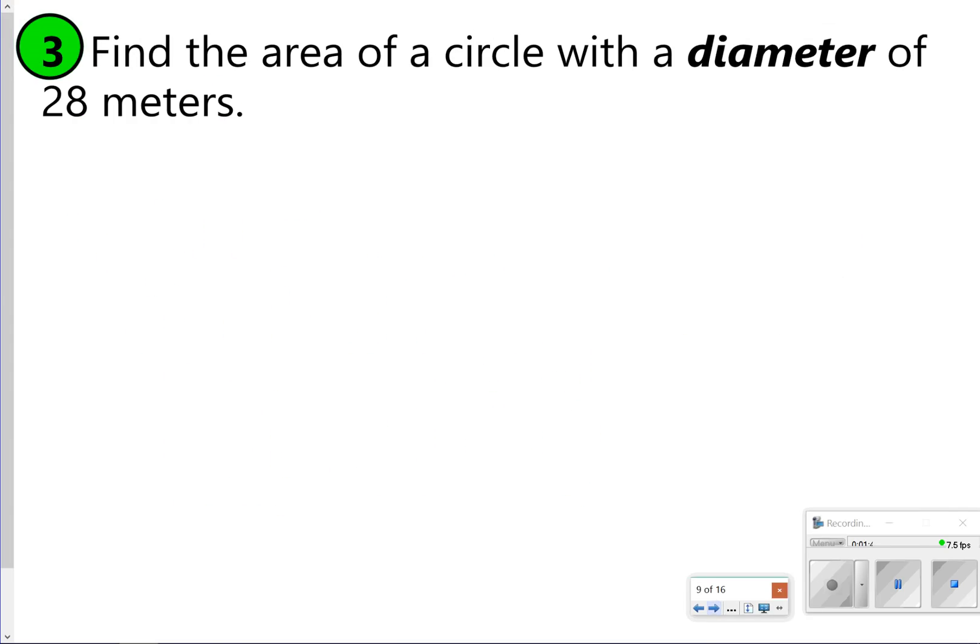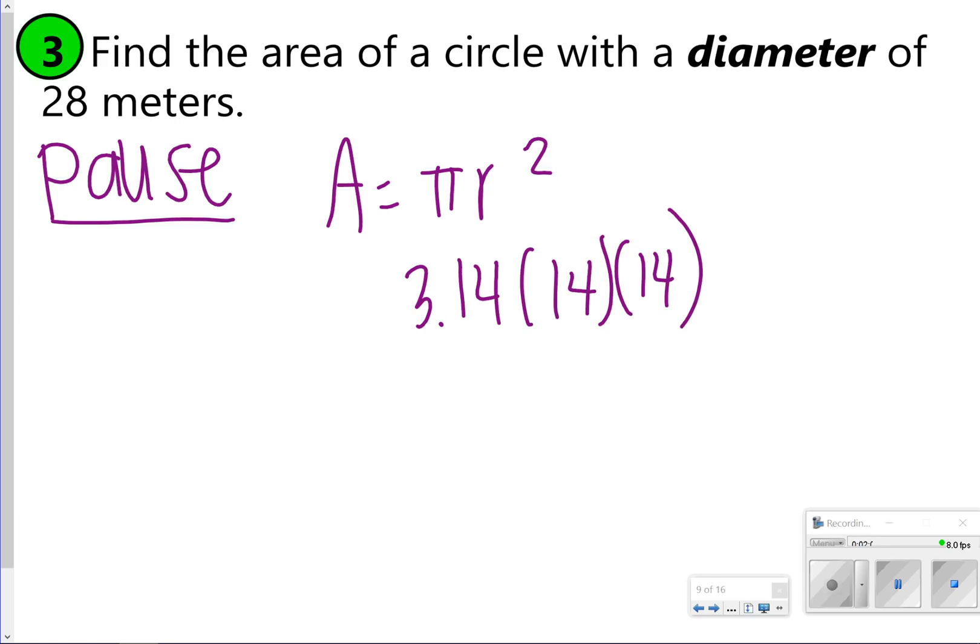Here's another one that you're going to try, except it's just a word problem. Go ahead and pause the video. Once you're done trying it, click play to check your work. For this one, still using your area formula of pi times radius squared, that's 3.14 times 14 times 14. Since your diameter is 28, you should cut it in half. Once you've multiplied those numbers together, you should get 615.44 meters squared.